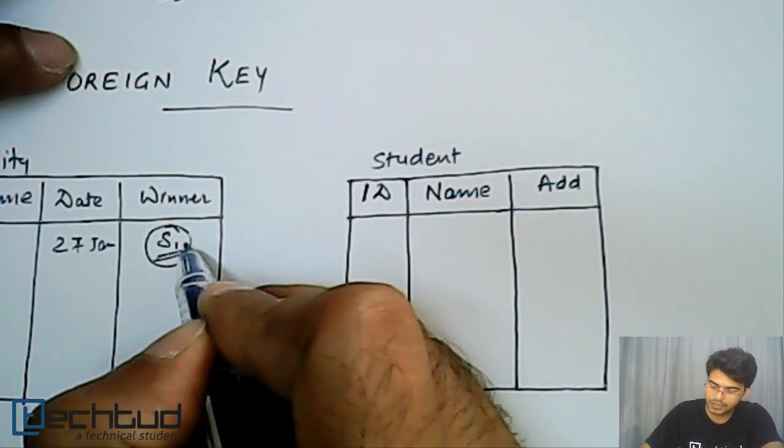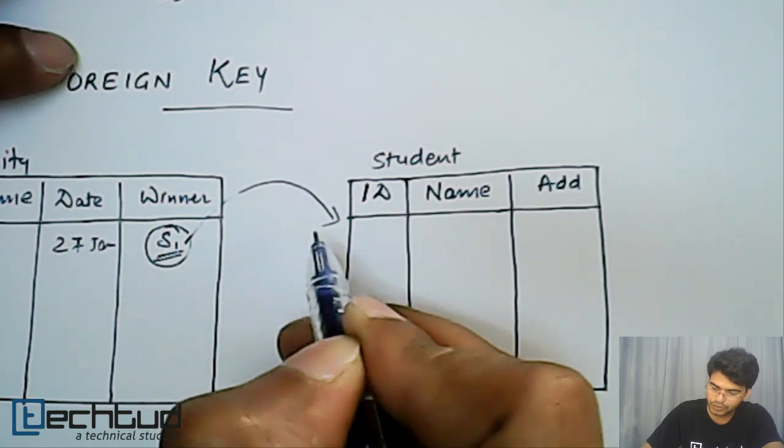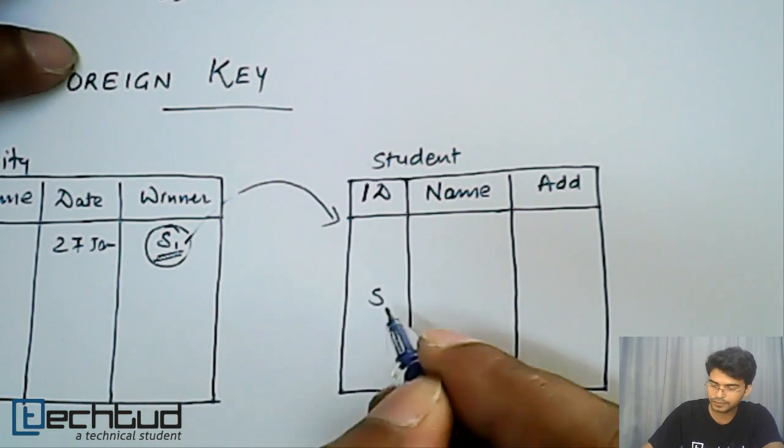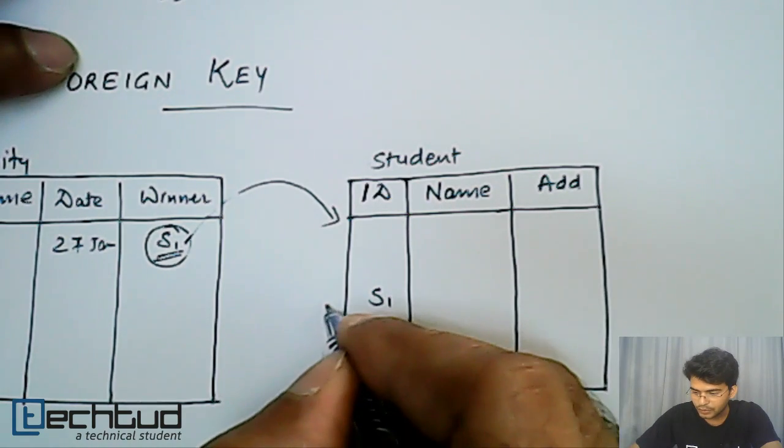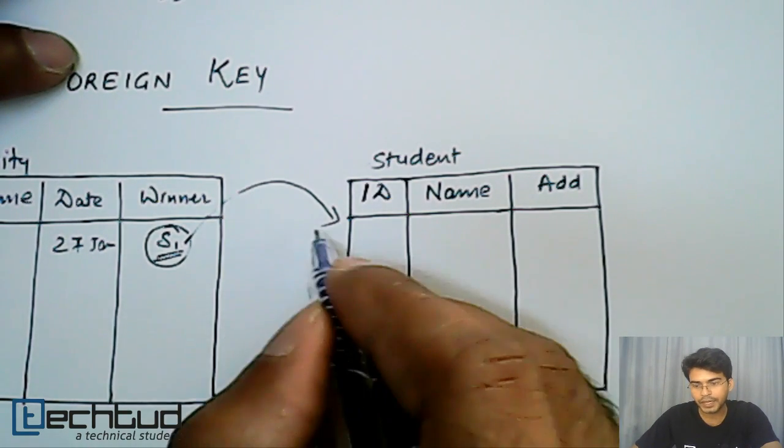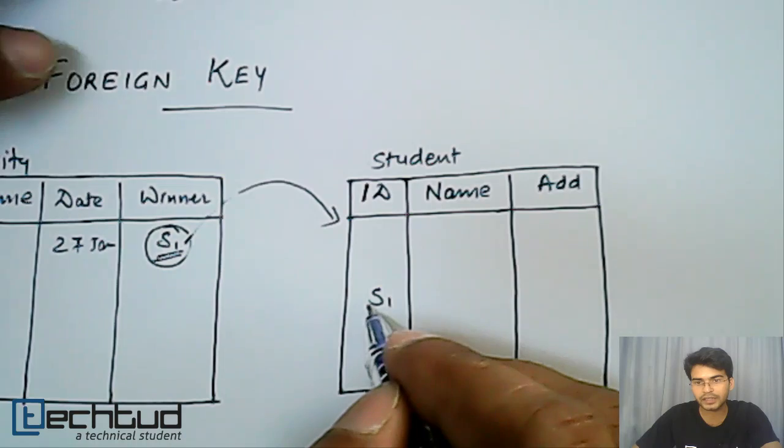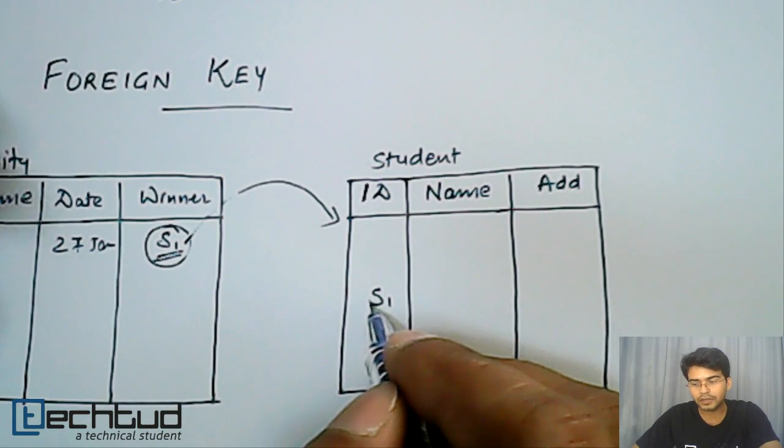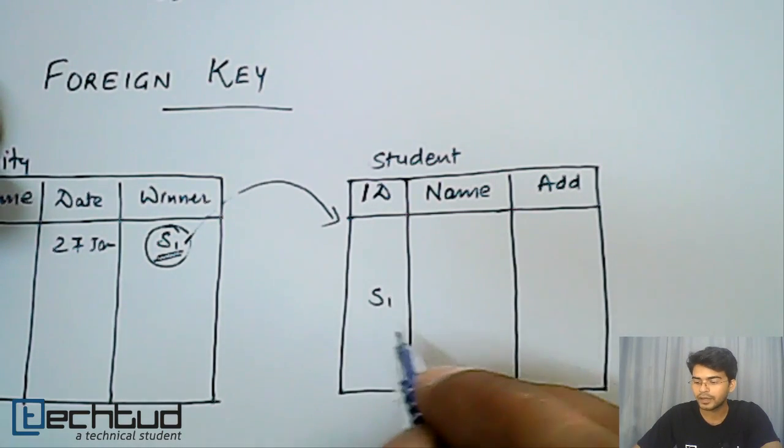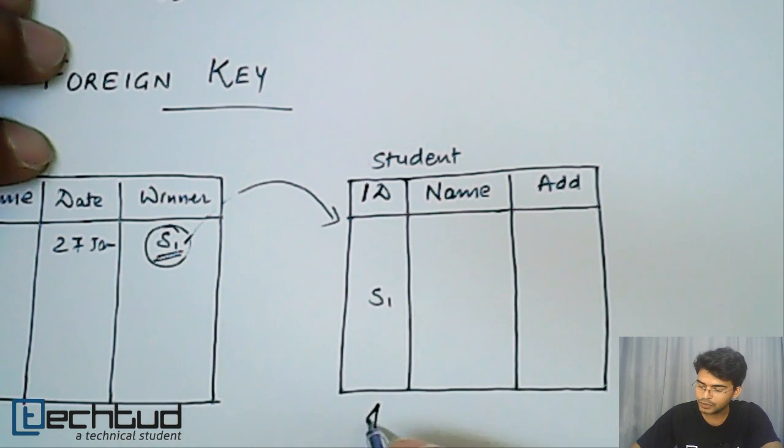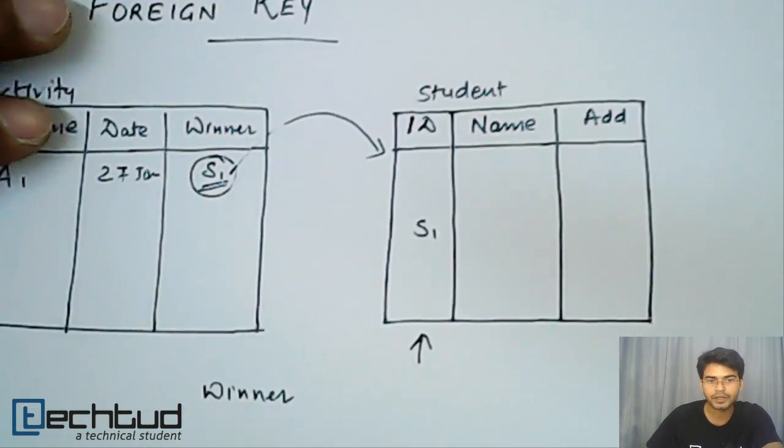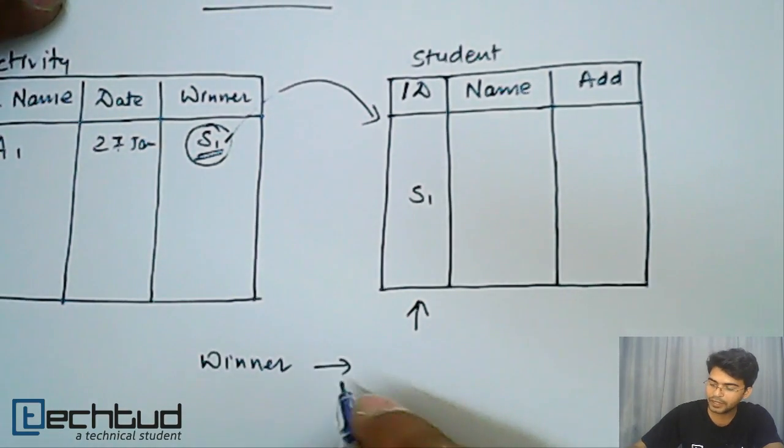Now through this S1 we will go to another table which is student table and we will search who is S1. So this S1 should be unique. Whatever I am referring here should be unique. Like there should not be two columns in this student table having S1 as an id. This winner has to be a primary key in another table.